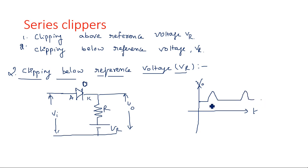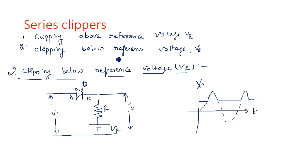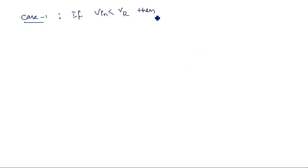This type of waveform will appear — the remaining signal will come through as it is. Now let us see the operation in detail. Case one: if Vin is less than Vr, then the input voltage is less than Vr, so the anode potential is low compared to cathode potential, and the diode is said to be in off state.